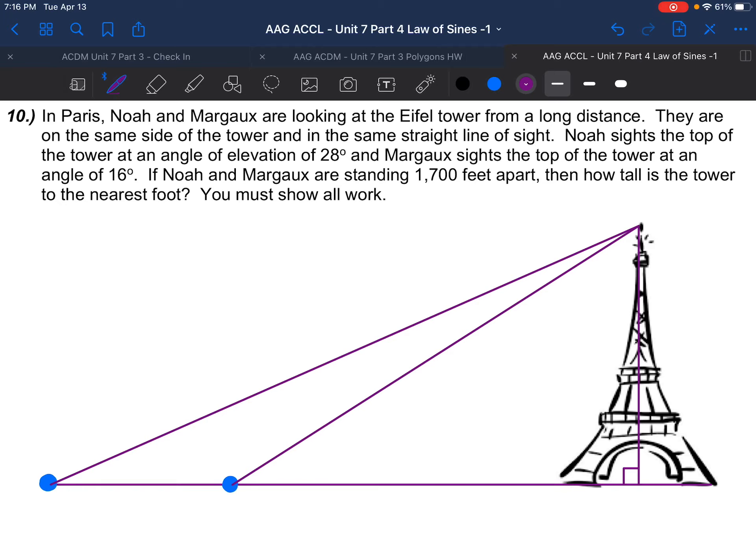They are on the same side of the tower and in the same straight line of sight. Noah sights the top of the tower at an angle of elevation of 28 degrees, while Margot sights the top at an angle of 16 degrees. If Noah and Margot are standing 1,700 feet apart, then how tall is the tower to the nearest foot?